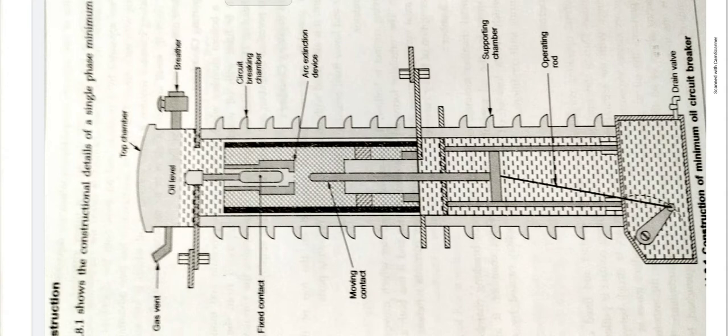During abnormal conditions, the moving contact is pulled down by the tripping springs with the separation of contacts and arc is struck between them. Then, the energy in the arc causes vaporization of oil. This will produce gases at high pressure.